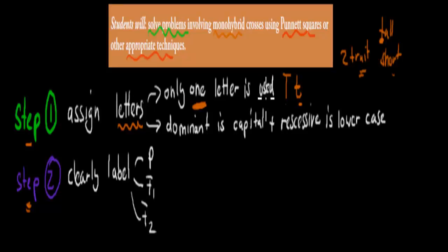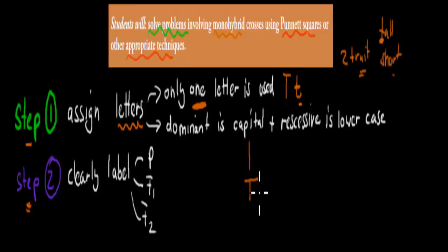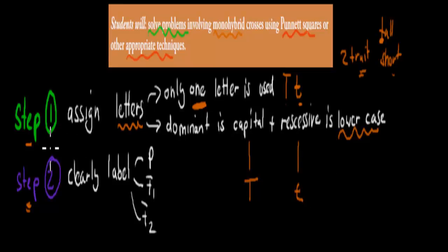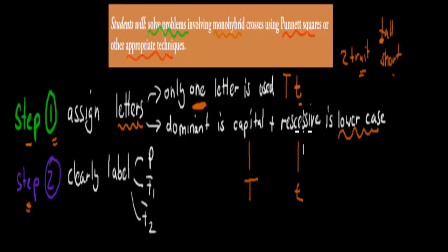So choose one letter, and make sure you assign the dominant trait the capital version of that letter. In this case, dominant is capital T which stands for tall, whereas the recessive one — short — stands for lowercase t. That's step one.